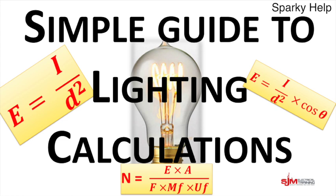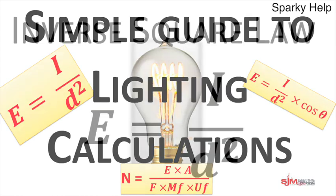Another edition of Sparky Help. This time we're going to be looking at lighting and the simple calculations. We have inverse square law, the cosine law, and the lumen method. Let's start looking at the first one.